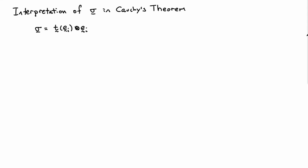Let's first recall the definition of sigma. We had this construction that produced a definition for sigma, which said that it was T acting on eᵢ outer product eᵢ. This then meant that sigma acting on the normal was equal to the traction on the surface with that normal. Also, the divergence of this tensor sigma plus the body force is equal to rho times the acceleration. Those were things we learned in the proof of Cauchy's theorem.